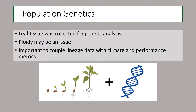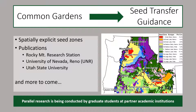Leaf tissue was also collected for genetic analysis, which will help us understand whether ploidy may be an issue to consider when making our recommendations, as well as allowing us to couple lineage data with climate and performance metrics. This data will be used to create seed transfer guidance for restoration, which will include spatially explicit seed zones — such as those created for blue bunch wheatgrass depicted here from a publication by St. Clair et al. — as well as scientific publications produced by the Rocky Mountain Research Station and our academic partners at the University of Nevada Reno, Utah State University in Logan, and other partners.